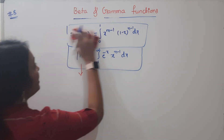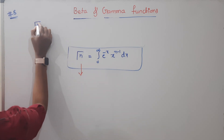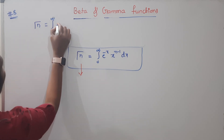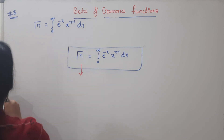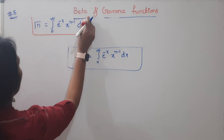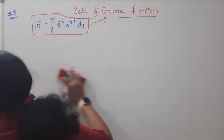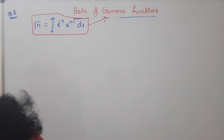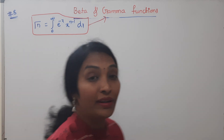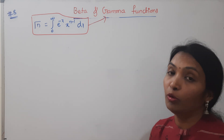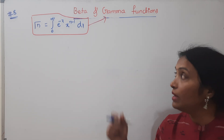Once you know the gamma formula, it is very easy to prove the remaining concepts. Gamma of n is equal to the integral from 0 to infinite of e to the power minus x times x to the power n minus 1 dx. Remember this concept — this is our gamma function. Now we are going to talk about gamma properties. The first property involves gamma of 1.